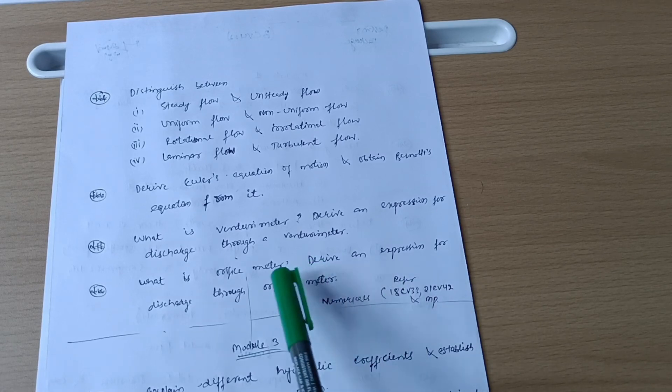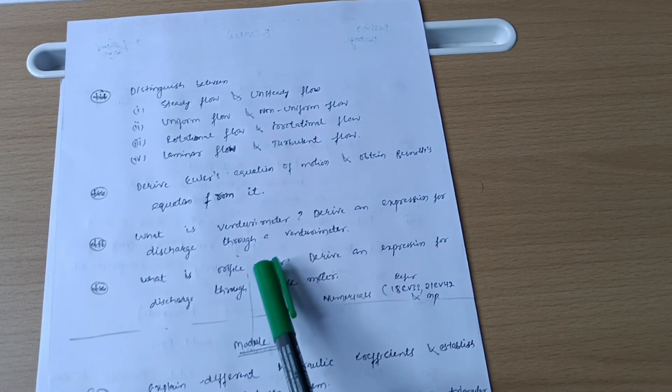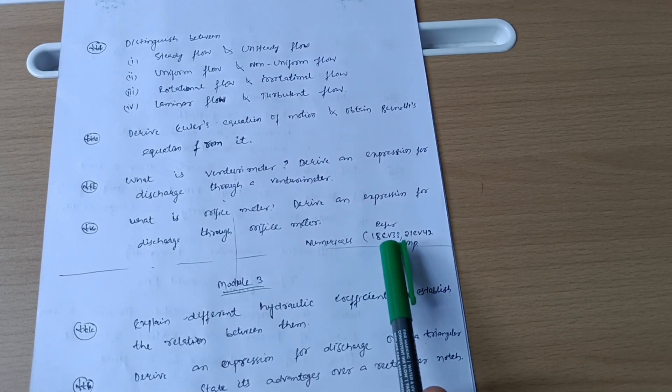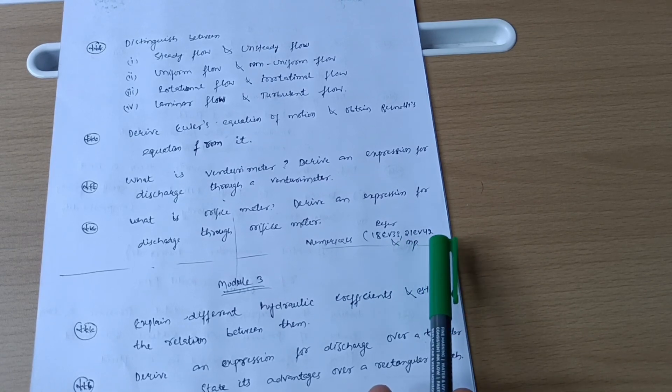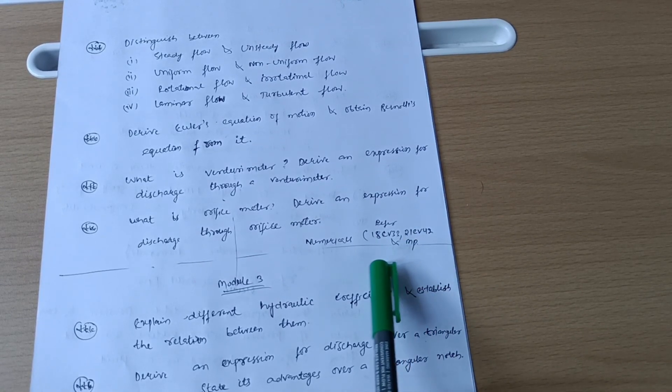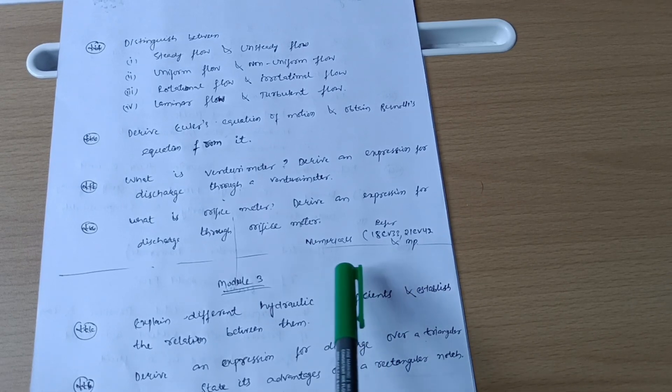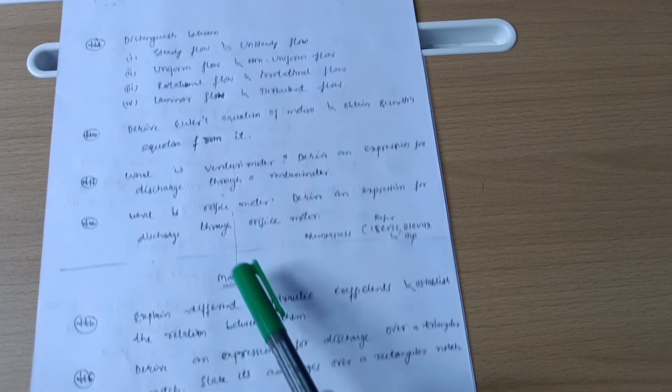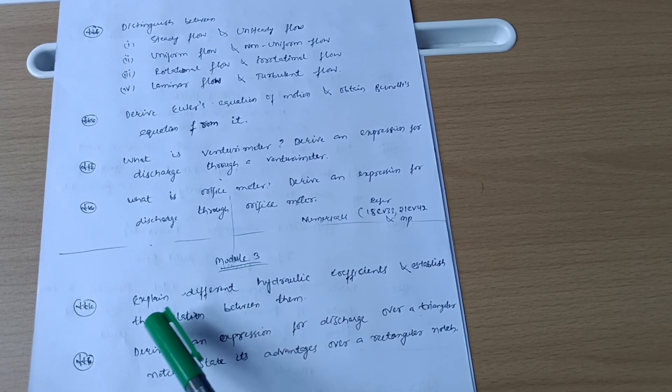So this much if you cover, you can at least get 10 to 15 marks. And if you want to go through problems of venturimeter and orifice meters, similarly you have to go through 18CV33 and 21CV42. So if you are unable to get these papers, let me know in the comment section so that I can upload those papers on my Instagram account also.